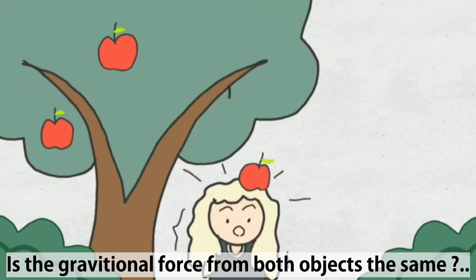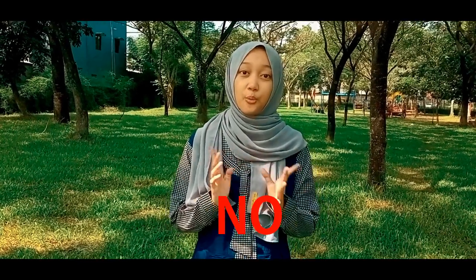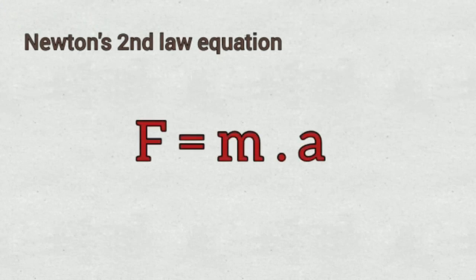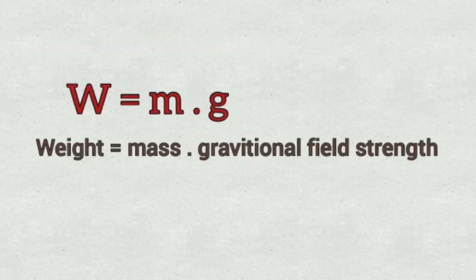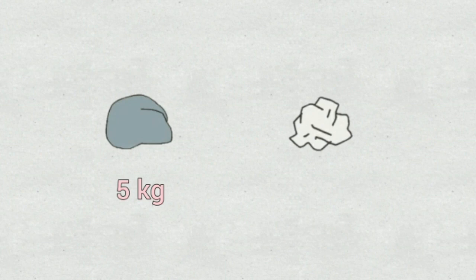Is the gravitational force from both objects the same? No. Why? If we modify Newton's second law equation slightly, we have a shortcut equation to calculate the weight of an object. Every object has 9.8 N per kilogram, or 10, gravitational field strength. For example, the mass of the rock is 5 kilograms and the paper is 2 kilograms. Now let's check and find the gravitational force.